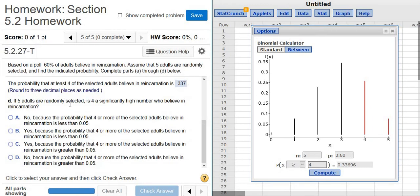If 5 adults are randomly selected, is 4 a significantly high number who believe in reincarnation? So basically you look at the probability here, the probability of 4 or more. So if this probability is less than 0.05, then we'll say yes, it's unlikely, so it's a significantly high number.